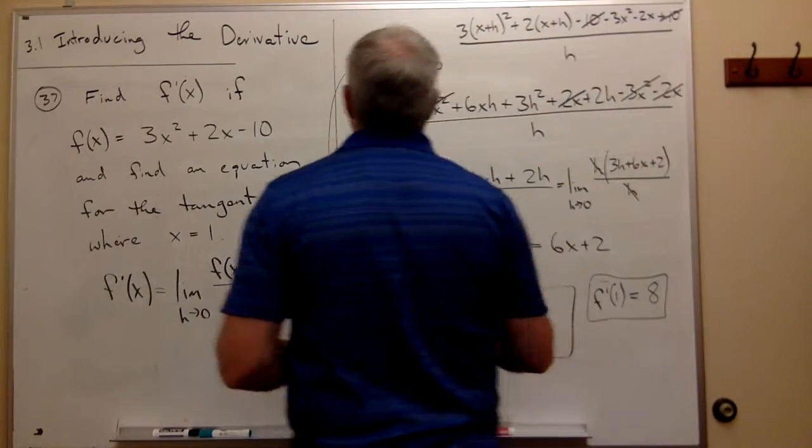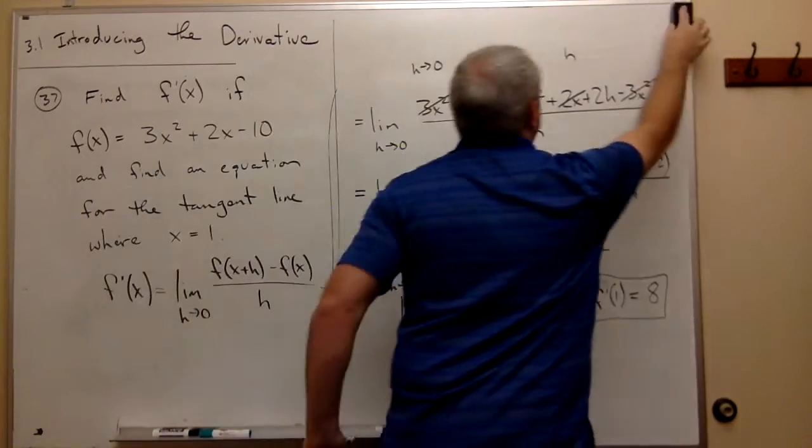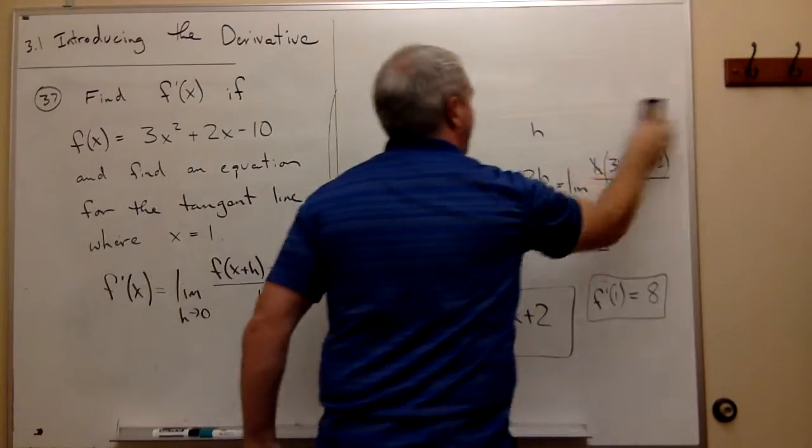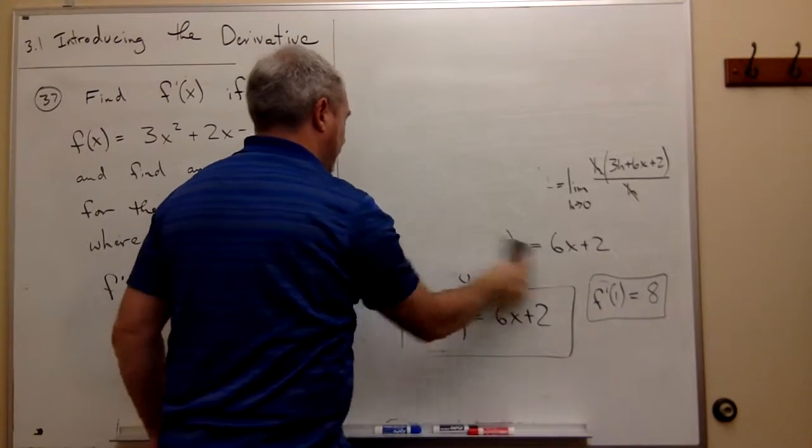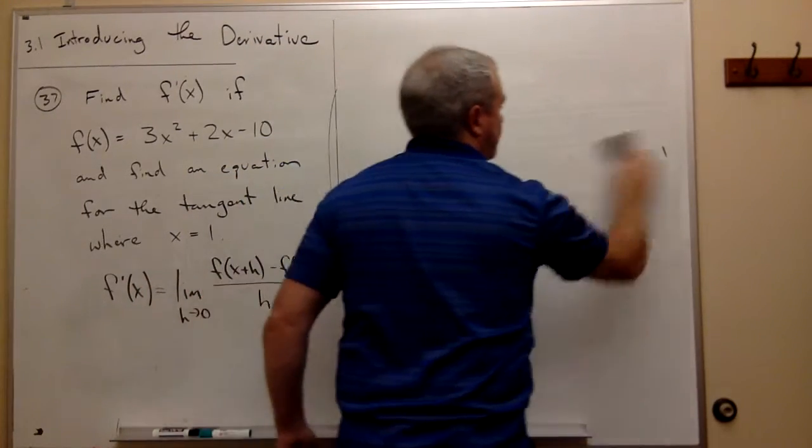Now that I know the slope, I also need to know a point. If I know a point and I know the slope, then I am able to calculate the equation of that tangent line. So let's do that right now.